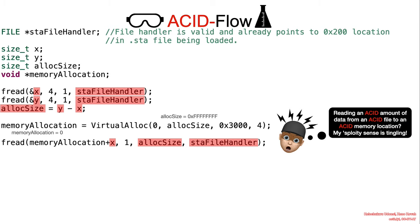In summary, we're reading an arbitrary amount of data from an arbitrary file to an arbitrary memory location. The attacker gets to control the destination, the size of the content, and the actual content being read.